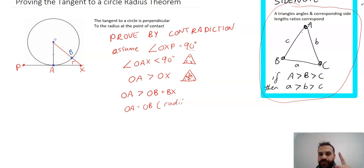So we have OB > OB + BX. If I substitute OA for OB (since OA = OB), then subtracting OB from both sides gives us 0 > BX.